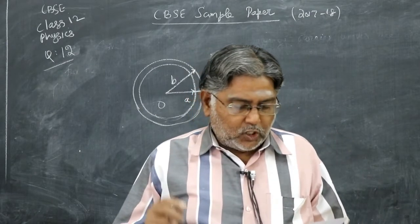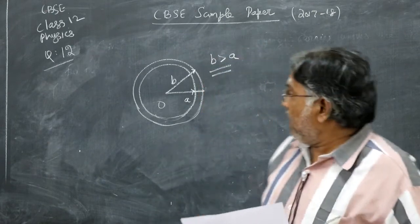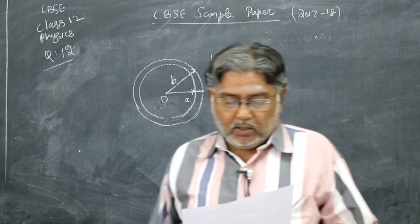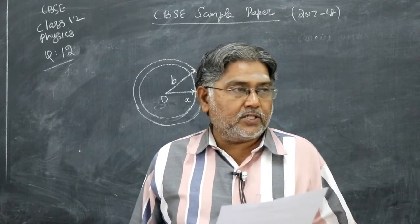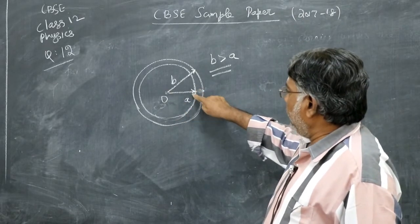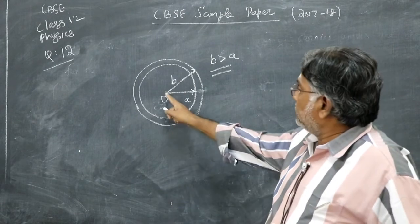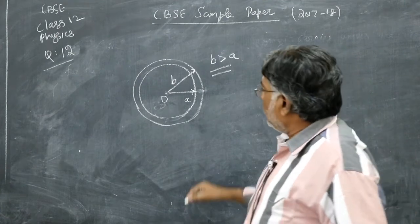A point charge plus Q is placed at the center O of an uncharged hollow spherical conductor of inner radius A, outer radius B. This is the spherical conductor. Find the following.